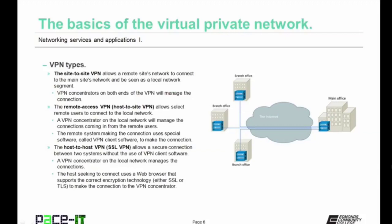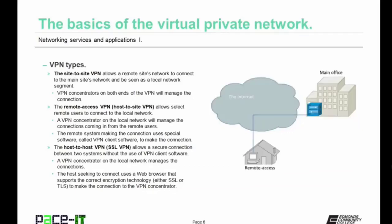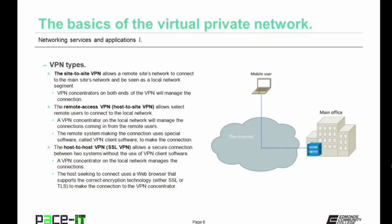There are several different types of VPNs. There is the site-to-site VPN, which allows a remote site's network to connect to the main site's network and be seen as a local network segment — VPN concentrators on both ends manage that connection. Then there's the remote access VPN, also called a host-to-site VPN, which allows select remote users to connect to the local network. A VPN concentrator on the local network manages the incoming connection, and the remote system uses special VPN client software to make that connection.